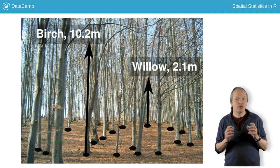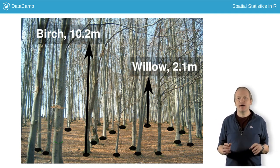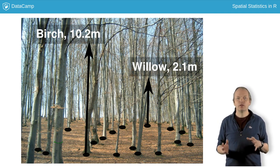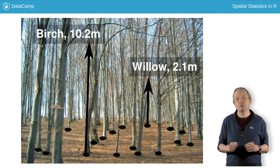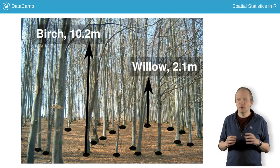In the spatial point pattern jargon, these are called marks, and you have a marked point pattern. The height and width of a tree are examples of continuous numerical marks, and the species is a categorical mark.